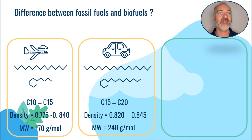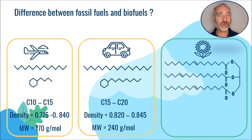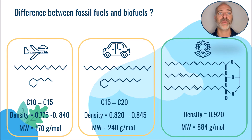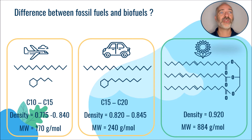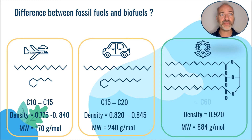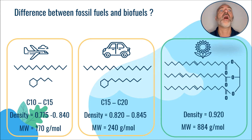Triglycerides, on the other hand, have a much higher density of about 0.92 and a much higher molecular weight of about 900 grams per mole. Indeed, a triglyceride has a larger number of carbon atoms — about 3 times 18 equals 54, plus the propane at the back end — or about 60 carbon atoms per triglyceride.